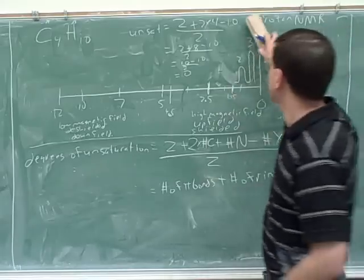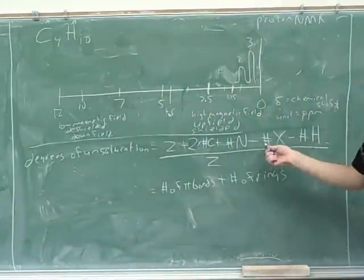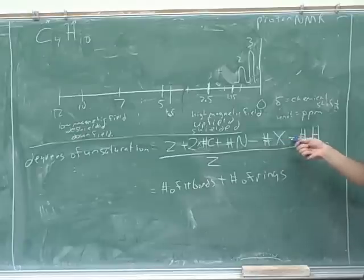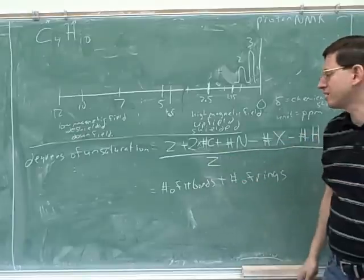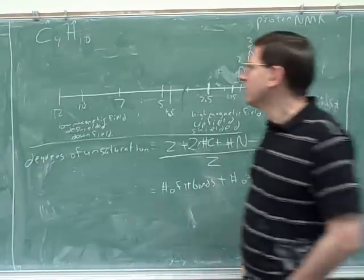Calculate the degrees of unsaturation, and then you know ahead of time how many pi bonds and or rings there are in the compound. Because remember, the whole point here is to try to figure out the structure. Well, this gives us a clue as to the structure that you wouldn't get directly from the spectroscopy, but we get from the elemental analysis. So here we have no pi bonds or rings. I struggled a little bit to get this formula right, so make sure you have the right version in your notes. Two plus two times the number of carbons plus the number of nitrogens minus the number of halogens minus the number of hydrogens divided by two. Notice that oxygens don't count.